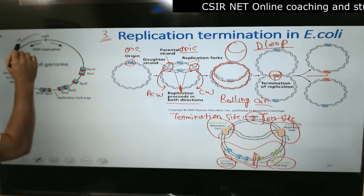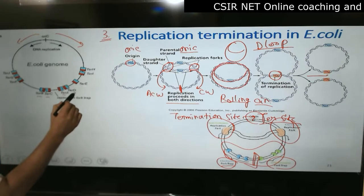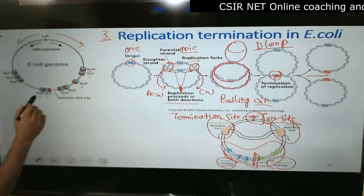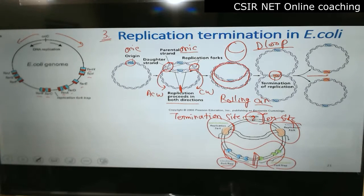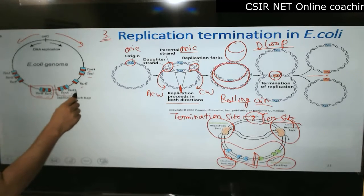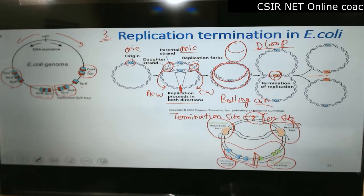These are origin, two forks are moving in opposite directions. These are all ter sites - they have different names: ter B, C, A, D, E, F, G, H, I, J. We have ter BCA complex, ter AD complex, HIGJ GF complex, and all these complexes are there.